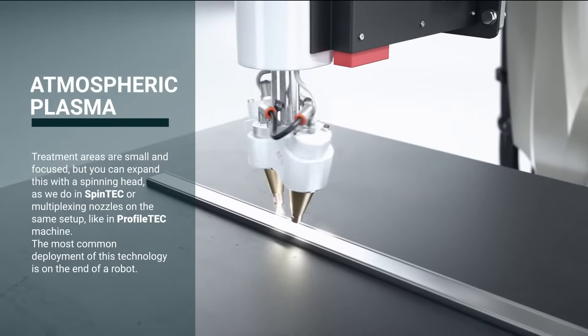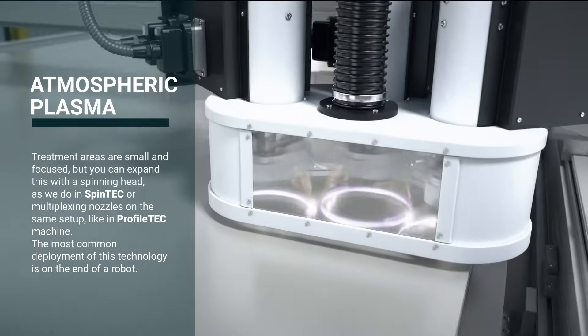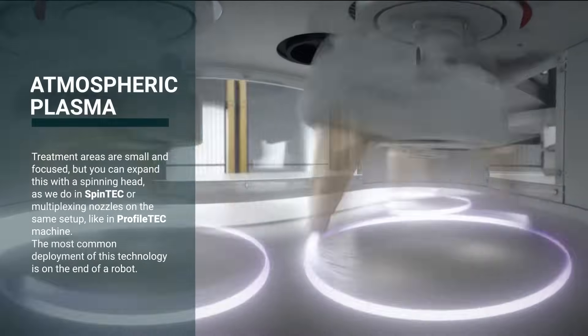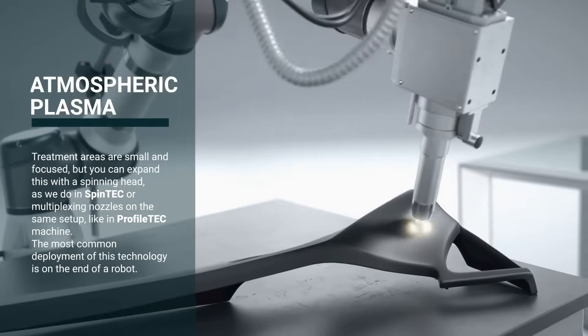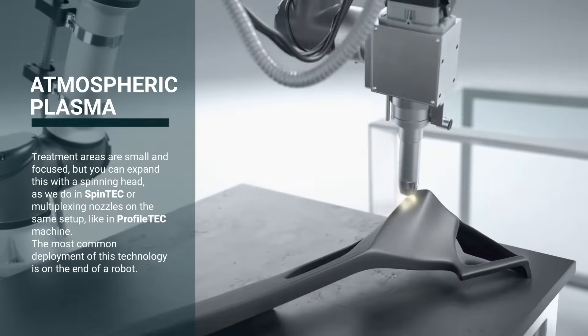Such treatment is versatile in treating both conductive and non-conductive parts. Tantec uses this technique in Plasma-Tec-X. Treatment areas are small and focused, but you can expand this with a spinning head, as we do in Spintec or multiplexing nozzles on the same setup, like in Profile-Tec Machine. The most common deployment of this technology is on the end of a robot.